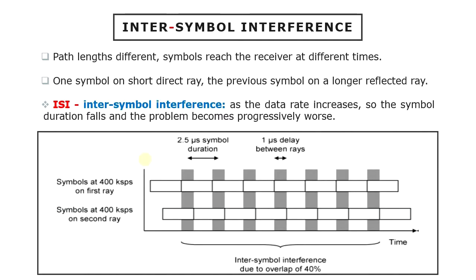If the path lengths of the longest and shortest rays are different, then the symbols traveling on those rays will reach the receiver at different times. In particular, the receiver can start to receive one symbol on a short direct ray, while it is still receiving the previous symbol on a longer reflected ray. The two symbols, therefore, overlap at the receiver, causing another problem known as inter-symbol interference.